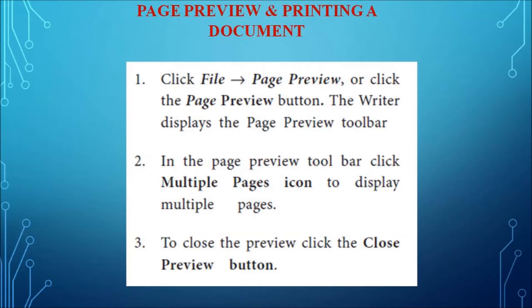The next topic is page preview. To preview a page created in the word processor, click the File menu and select the Page Preview option, or click the Page Preview button. The writer displays the page preview toolbar, where you can click the Multiple Pages icon to display multiple pages. To close the preview, click the Close Preview button. These are the steps for previewing a page in Open Office Writer.